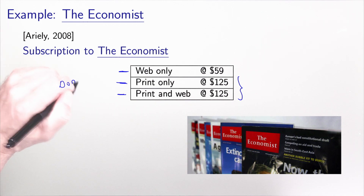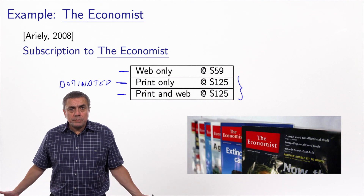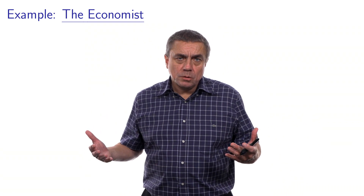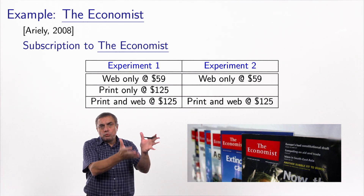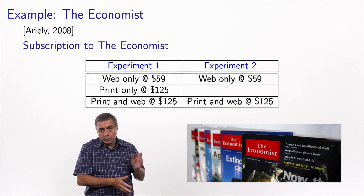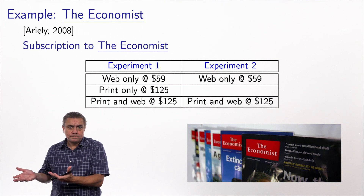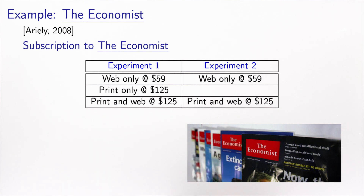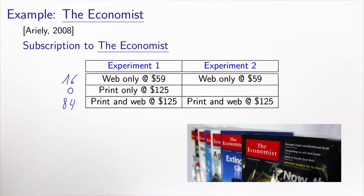Since print-only is dominated, it's irrelevant — nobody will ever choose it. So they organized an experiment with two independent groups. The first group was exposed to all three alternatives: web-only, print-only, and print-and-web, including the dominated alternative. In experiment one, 16 people chose web-only, 84 chose print-and-web, and 0 chose print-only, as expected. This is consistent with what we discussed: the dominated alternative is never chosen.